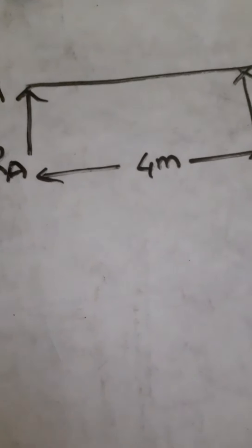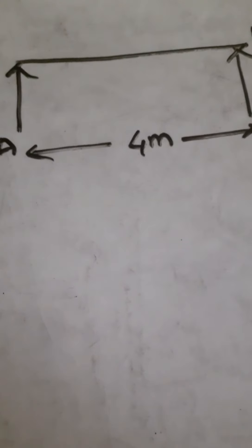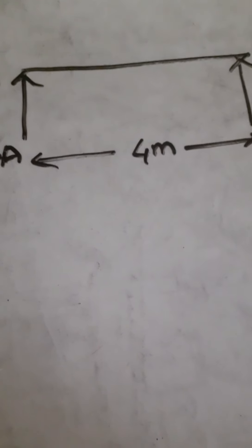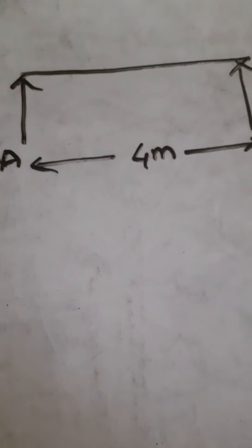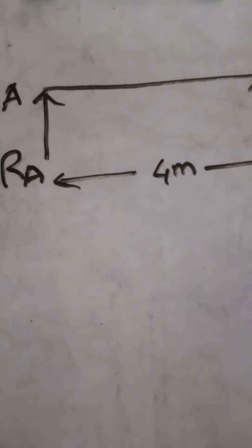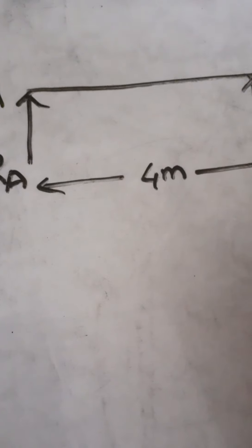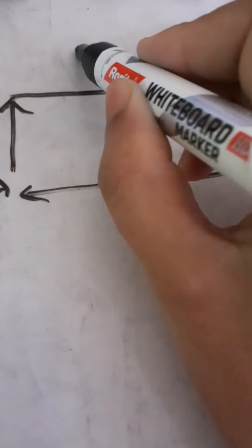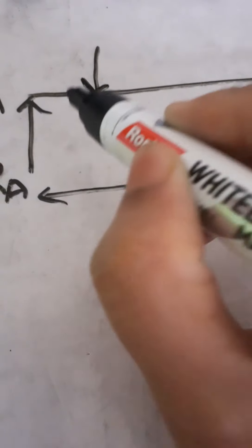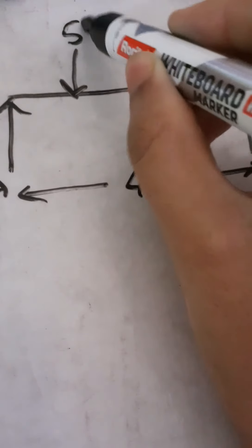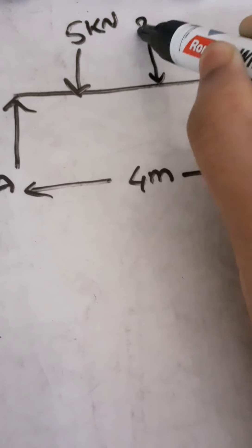Now we have been told that this 4 meter beam is carrying a load of 5kN, 2kN, and WkN. Loads of 5kN and 2kN are at a distance of 1 meter and 2 meter from RA. So 5kN at 1 meter distance from RA, and 2kN at 2 meter distance from RA.